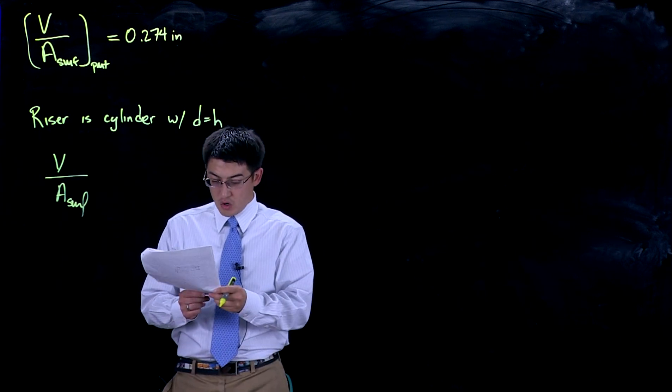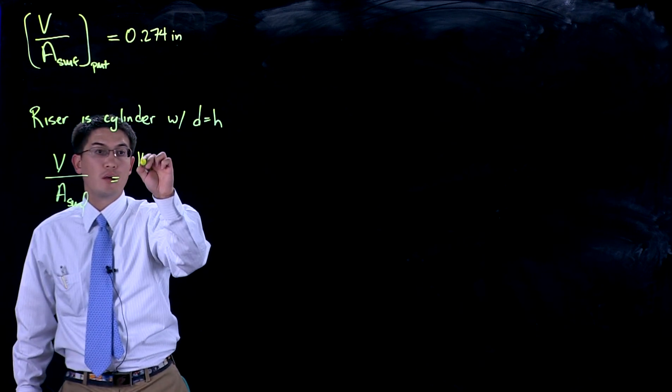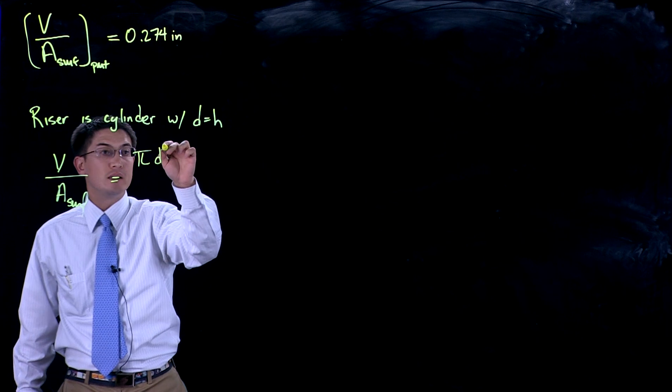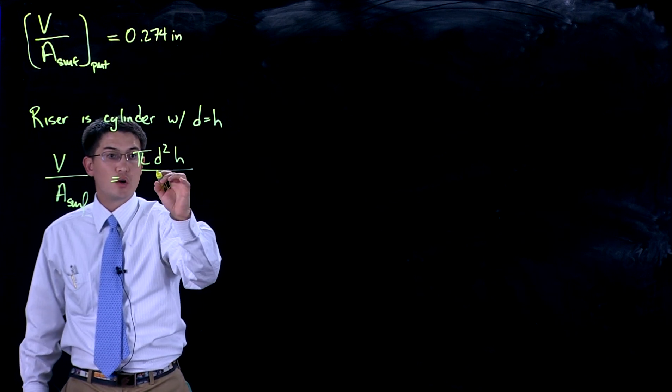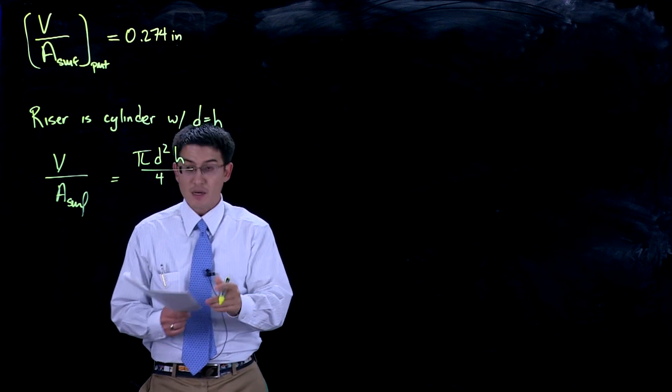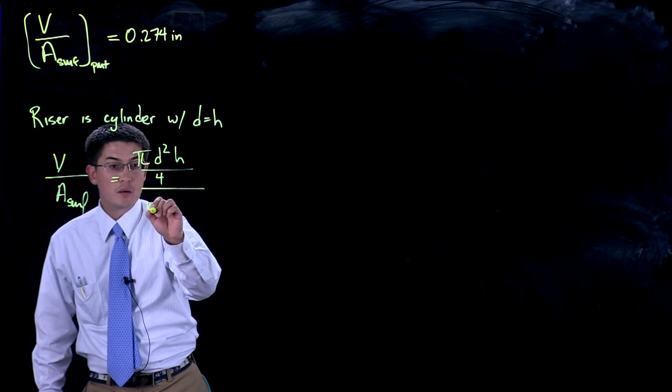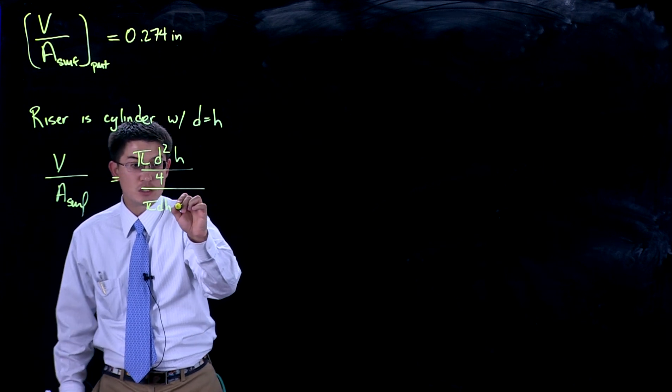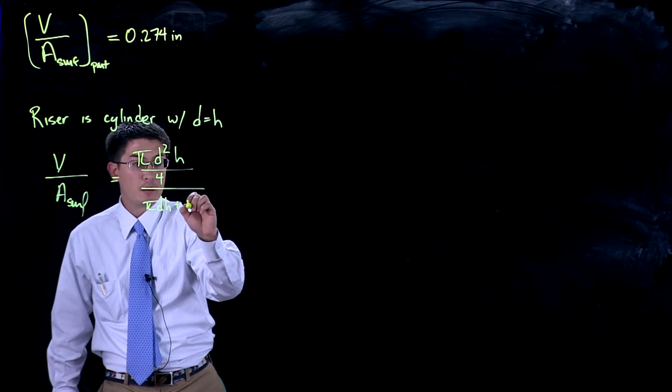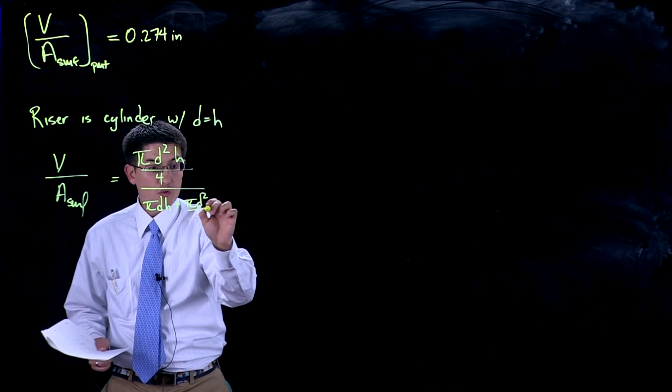The volume we can say is equal to pi d squared h over 4, and the surface area is pi d h plus pi d squared over 2.